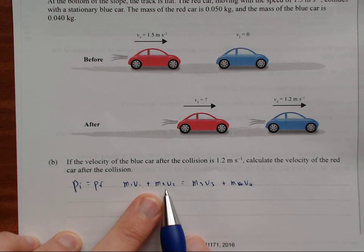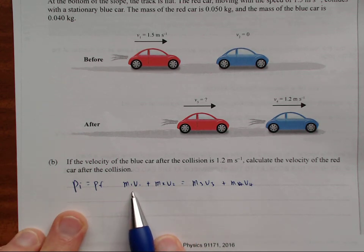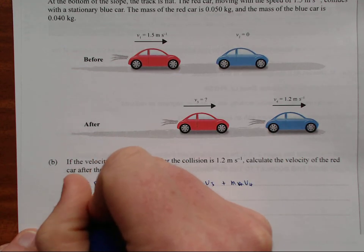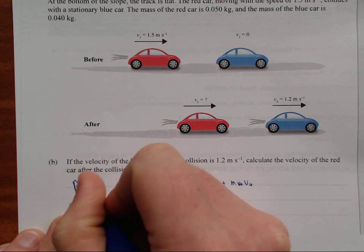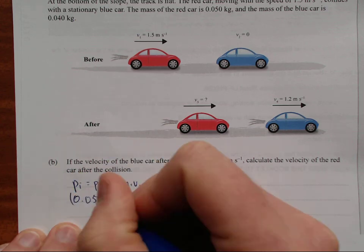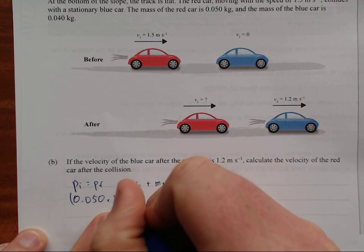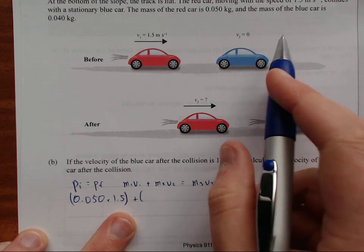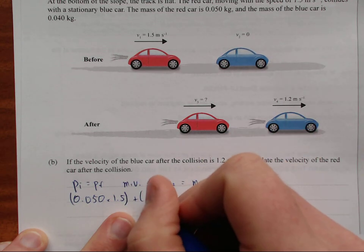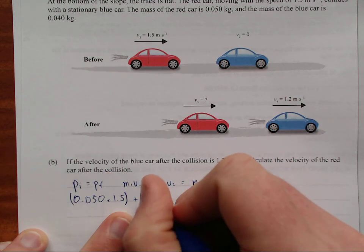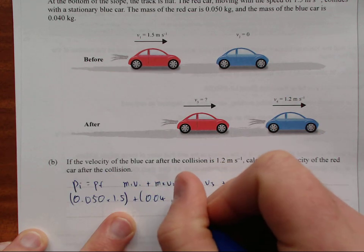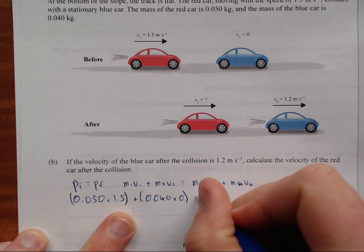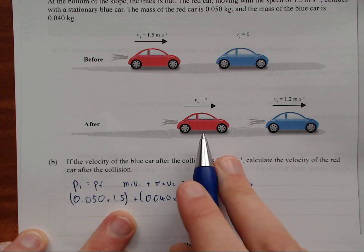So let's put that into numbers now. So our mass of the red car M1 is 0.05 kilograms, times velocity 1.5, plus blue car, the mass of the blue car is 0.04 kilograms, times 0 equals M3.